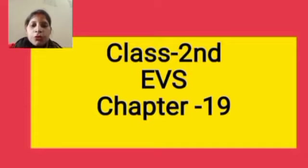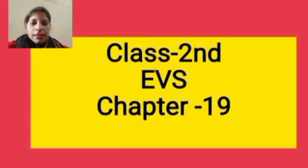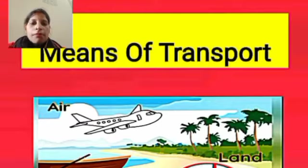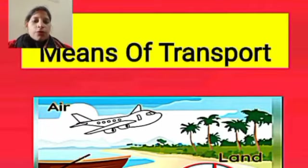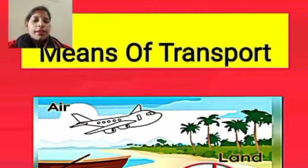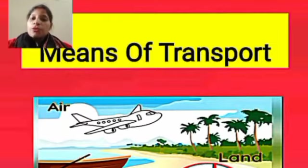Today we will continue our Chapter 19. We already discussed about means of transport — air transport, water transport, and land transport. We already read about land transport and water transport. So today we will discuss about air transport.